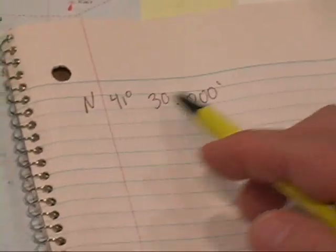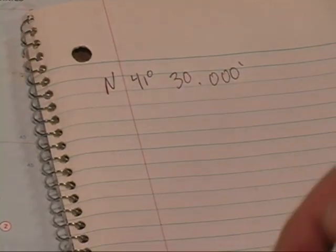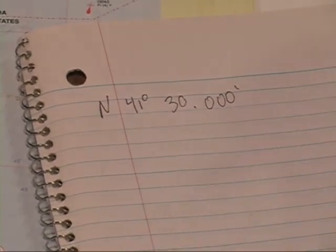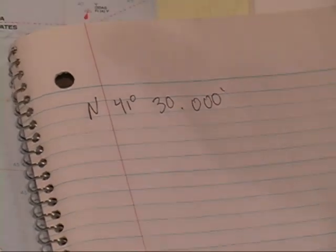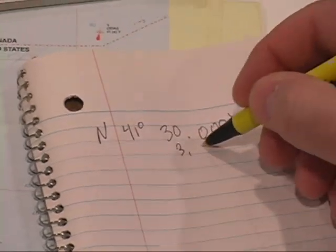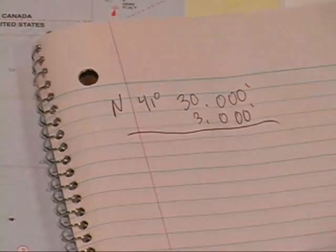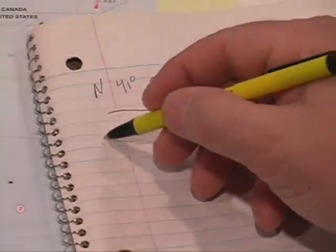So this is pretty simple math. There's my known point, 41 degrees 30.000. I'm going to add, because I'm going from south to north, my distance is 3.000 minutes. Off of that scale there, all I do now is simply add these together.